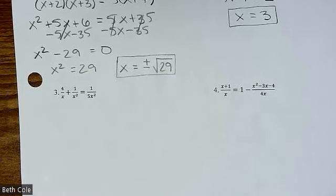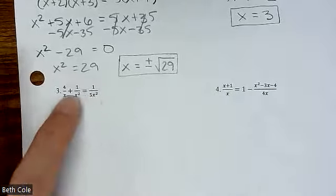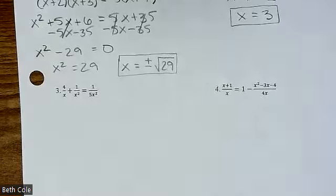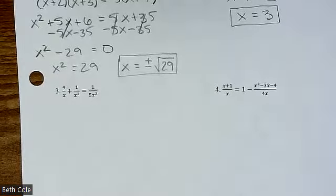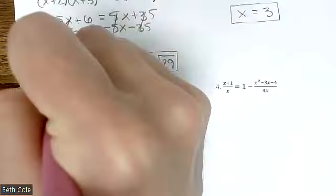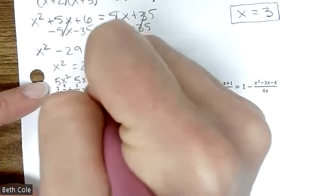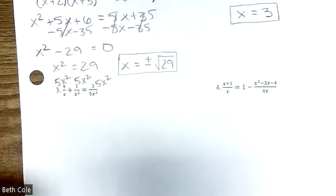You're trying to put everything together, so it's going to be bigger rather than smaller. Would anyone like to give a stab at this one? What do you think is your greatest common factor between all three of those? It's five X squared. You're going to multiply five X squared to all three of them.